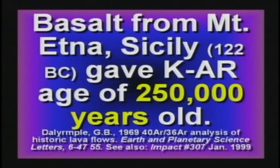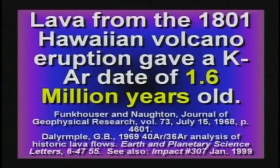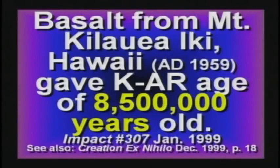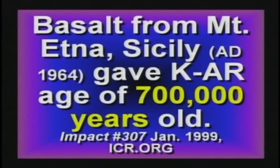The original content cannot possibly be known. You can't know there's been no contamination. You can't know that the decay rates always remain the same. Basalt from Mount Etna in Sicily — they knew it erupted in 122 BC, written records confirm it. They potassium-argon dated it and said it's 2.25 million years old. It should be about 2,000 years old. When they tested lava from a Hawaiian volcano known to have erupted in 1801 — people watched it happen — it gave an age of 1.6 million years old.